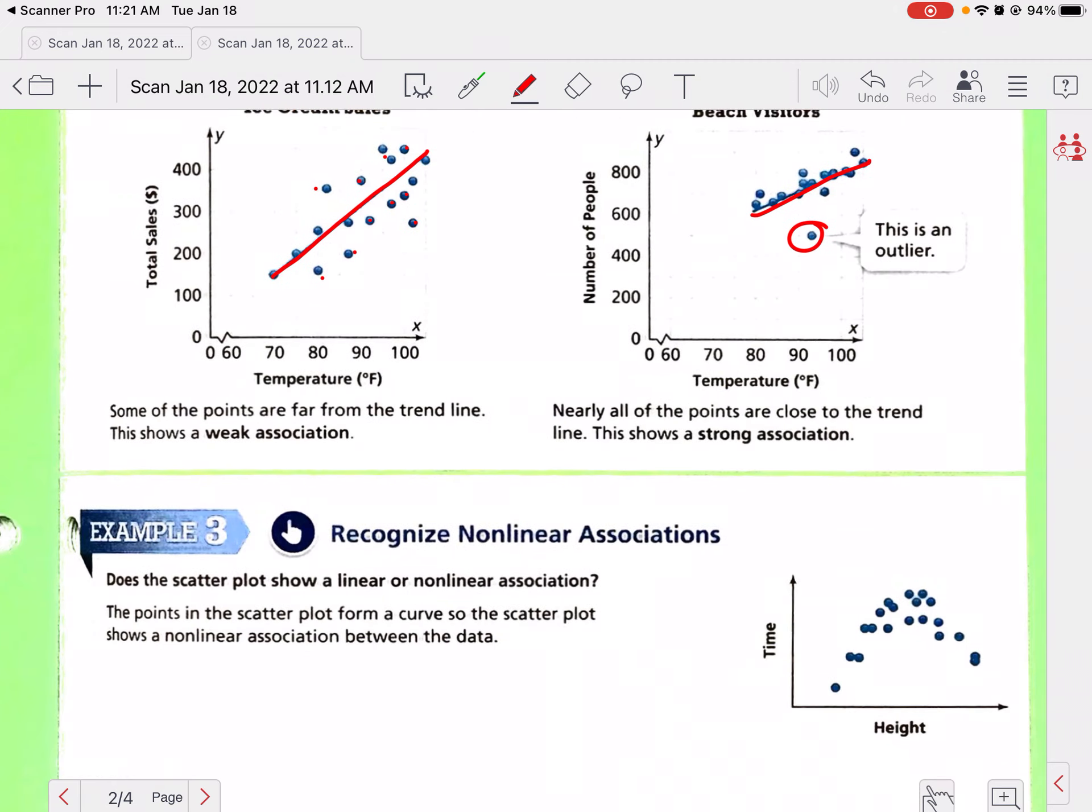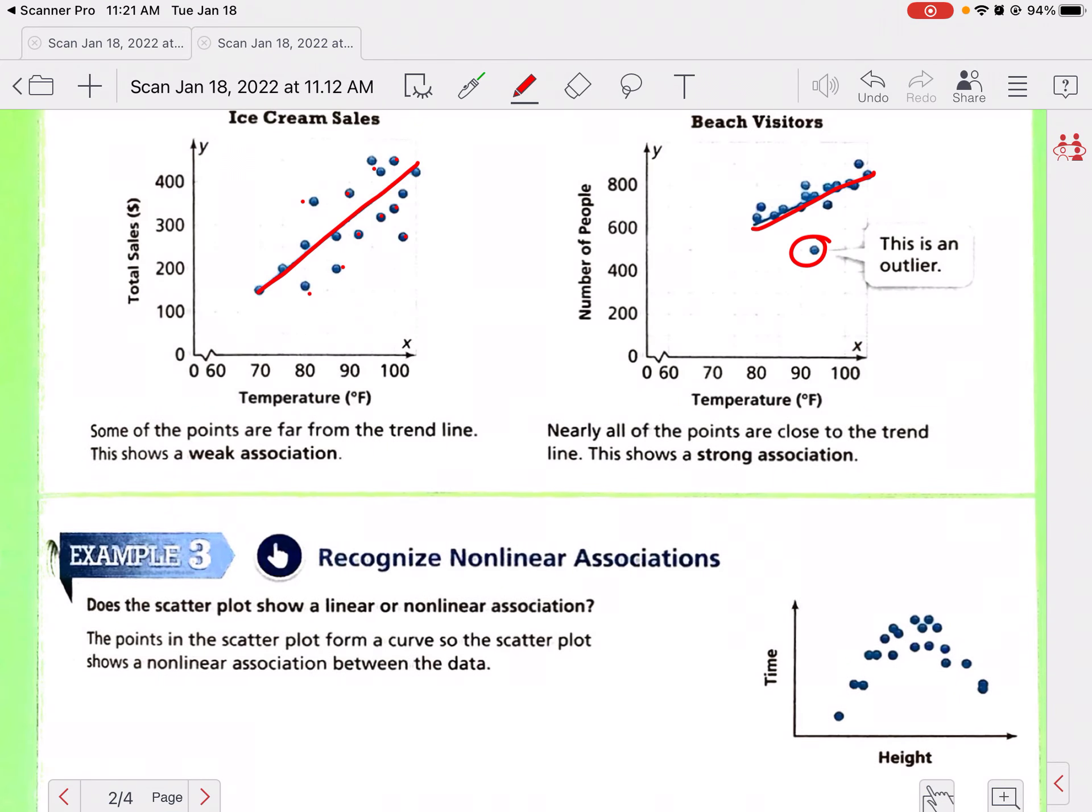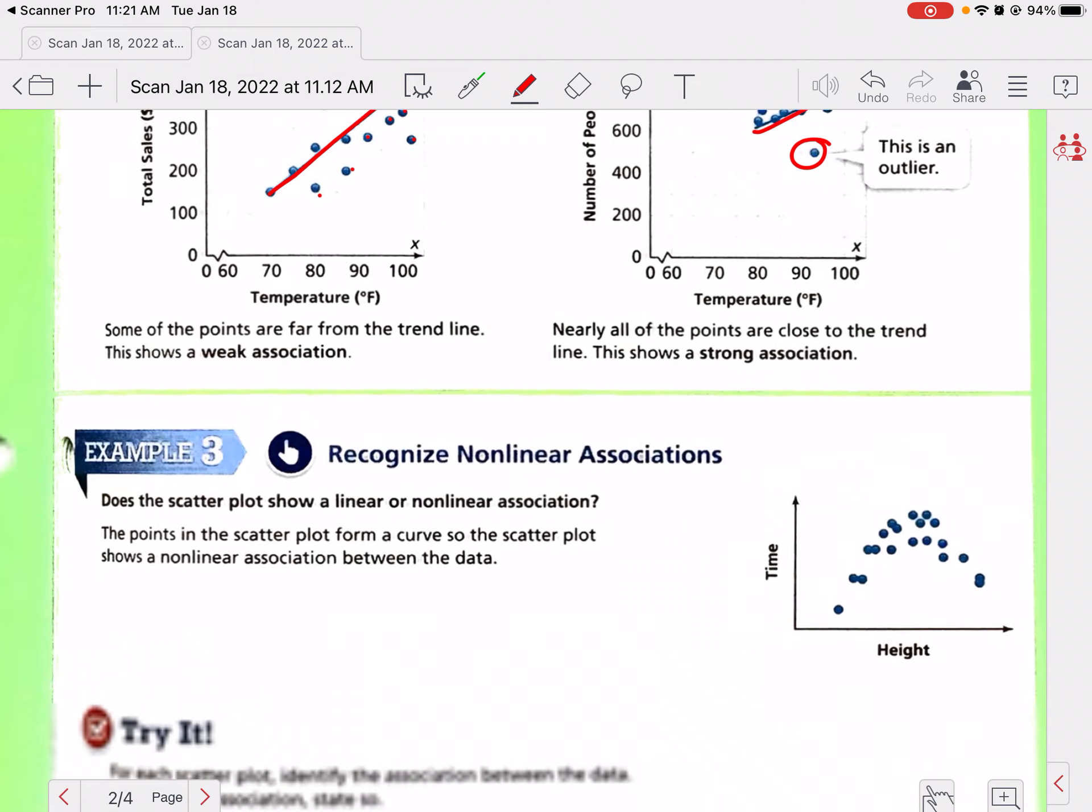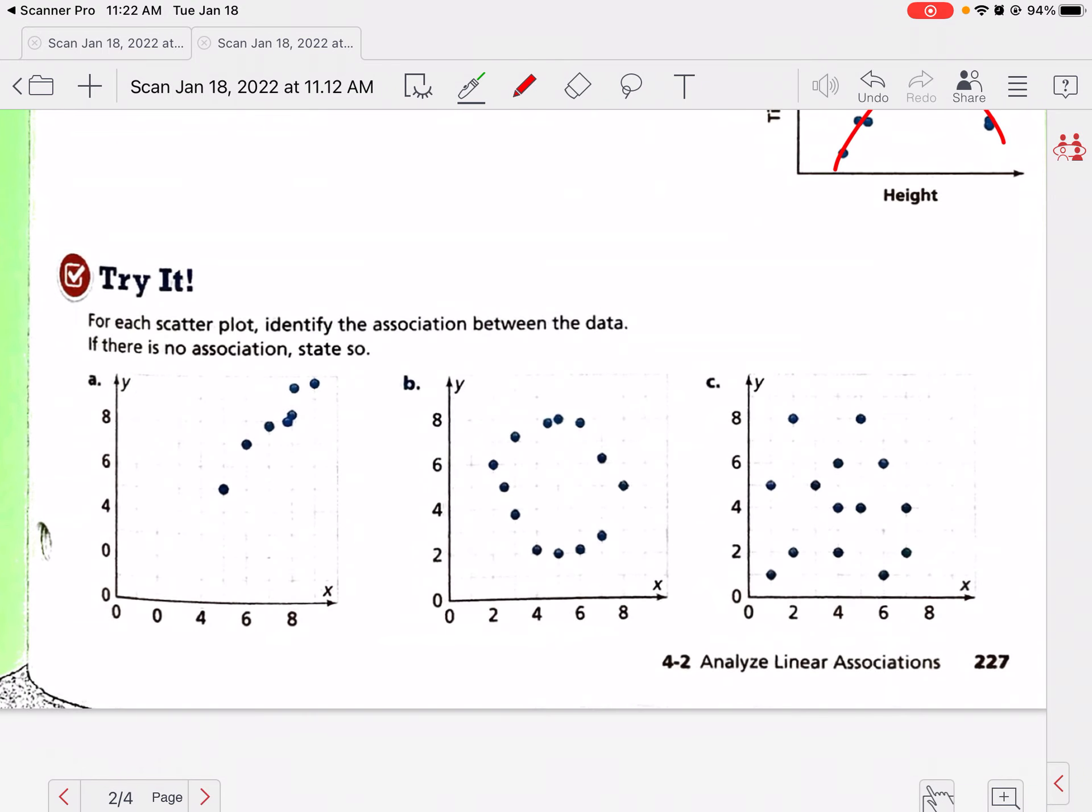So now sometimes these are linear association because there's a line formed, but sometimes we'll see non-linear associations like this one. We can see there's a curve happening. The points in the scatter plot form a curve, so the scatter plot shows a non-linear association between the data. That's fine, it can show a non-linear. This might be kicking a ball - as the height happens, time is going by, and then it's coming down.